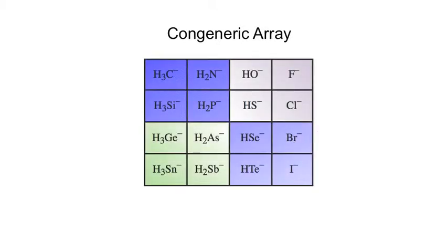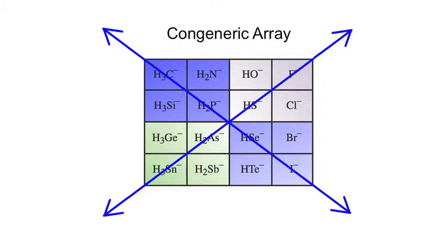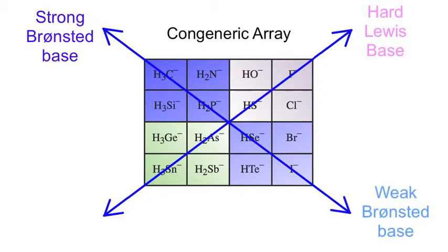We also find this in two-dimensional congeneric arrays, where there are regular changes in chemistry from left to right, up and down, and diagonally. In this two-dimensional array, the carbanion is the strongest base and iodide ion is the weakest Brønsted base. Using Pearson hard-soft acid-base analysis, fluoride ion is the hardest base and the tin hydride ion is the softest Lewis base.